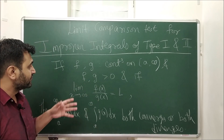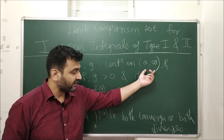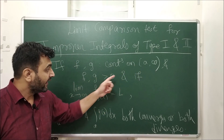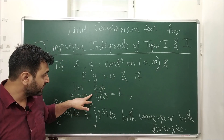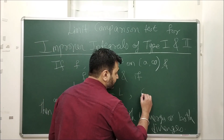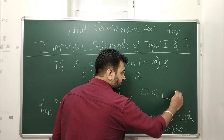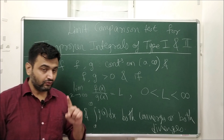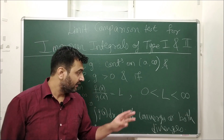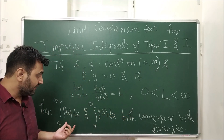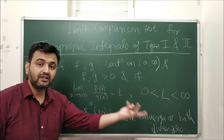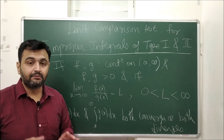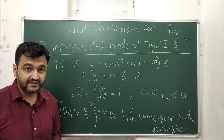So what does the theorem say? If you have continuous functions on [a, ∞) and both are positive functions, and if the limit of the ratio f/g is L, where L is some positive, nonzero, and finite number, then integral of f and integral of g both will converge or both will diverge. So they both behave in the same way — that's what the theorem says.